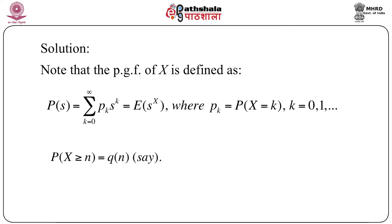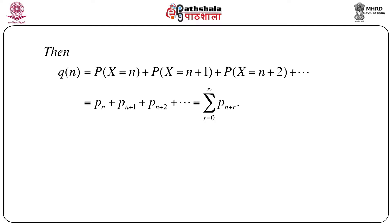We have to derive the probability generating function of the expression P(X ≥ n). Let's call it q_n, since it is a function of n. First, note what q_n means in terms of simple probabilities: q_n = P(X ≥ n) = P(X=n) + P(X=n+1) + P(X=n+2) + ... which equals p_n + p_{n+1} + p_{n+2} + ..., or summation r=0 to infinity of p_{n+r}.